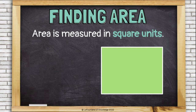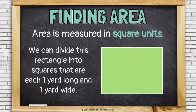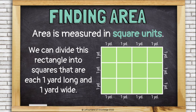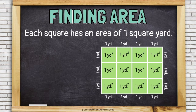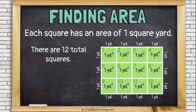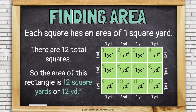Area is measured in square units. We can divide this rectangle into squares called unit squares. In this case, they're each one yard long and one yard wide. Each square has an area of one square yard, and there are 12 total squares, so the area of this rectangle is 12 square yards — written as 12 yd² (yd with an exponent of 2, which means squared).